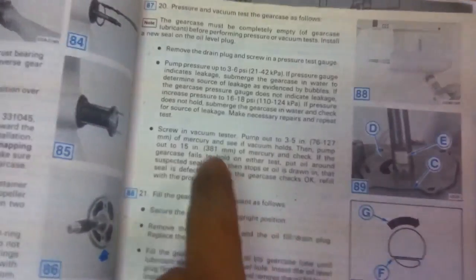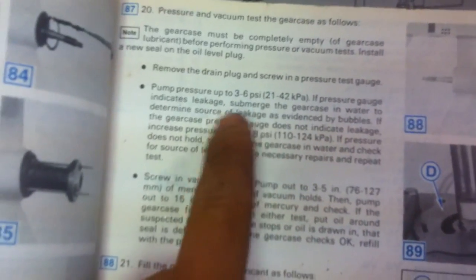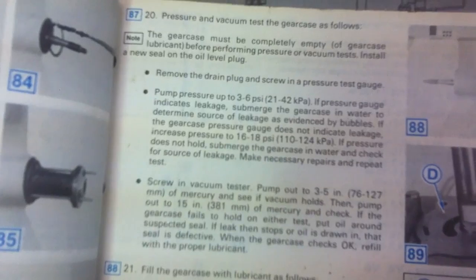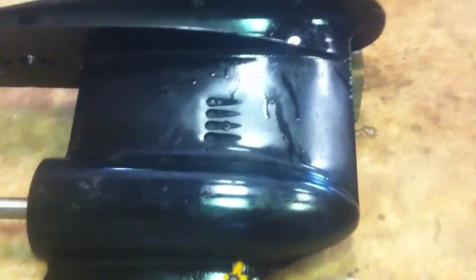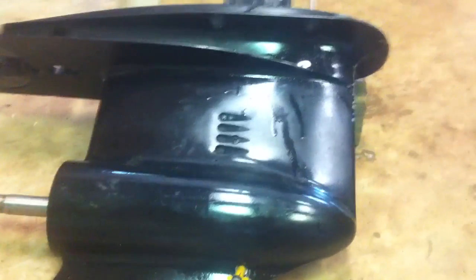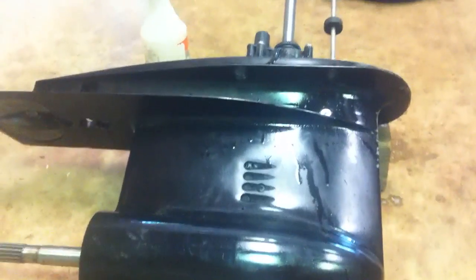Like it says, start with 3 to 6, and then go to 16 to 18 if that holds. Because if you put too much pressure in there, you're going to blow out the O-rings and stuff and you're going to make a mess. You're going to break something. So if you also got a leak, you can take it and just submerge the whole thing in water, but I'm not trying to do that.